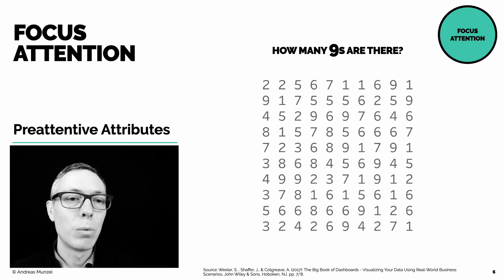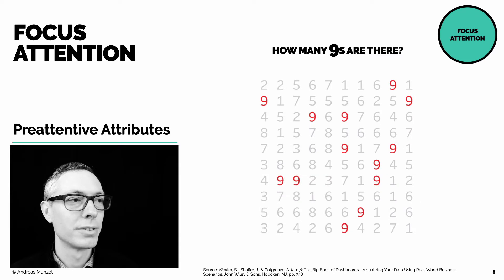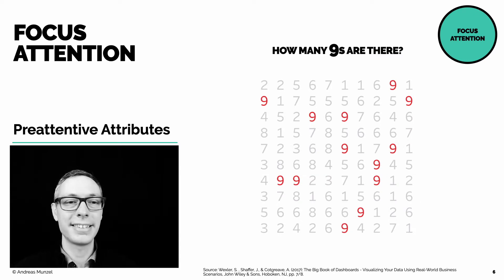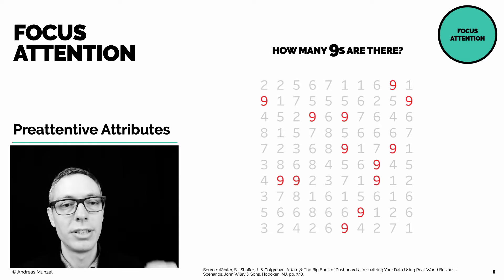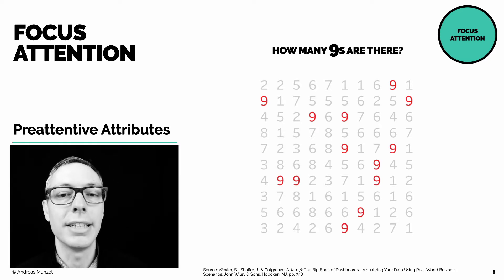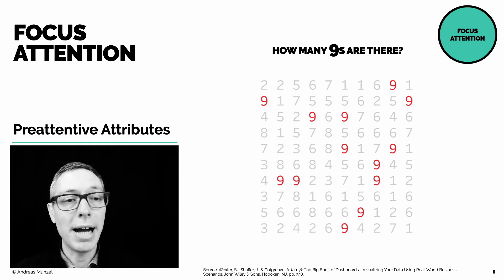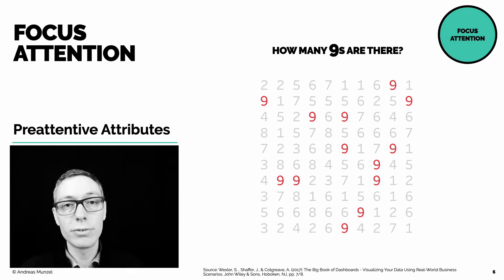Let's make one change to the grid and make it easier. Now the task is easy. Why? Because I changed the colors — the nines are red and all the other numbers are in light gray. Color differences pop out. Color is one of several pre-attentive attributes.